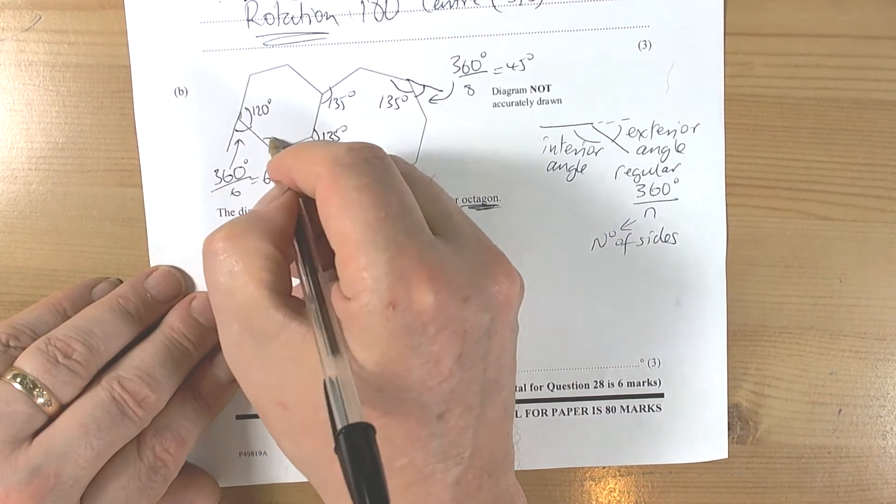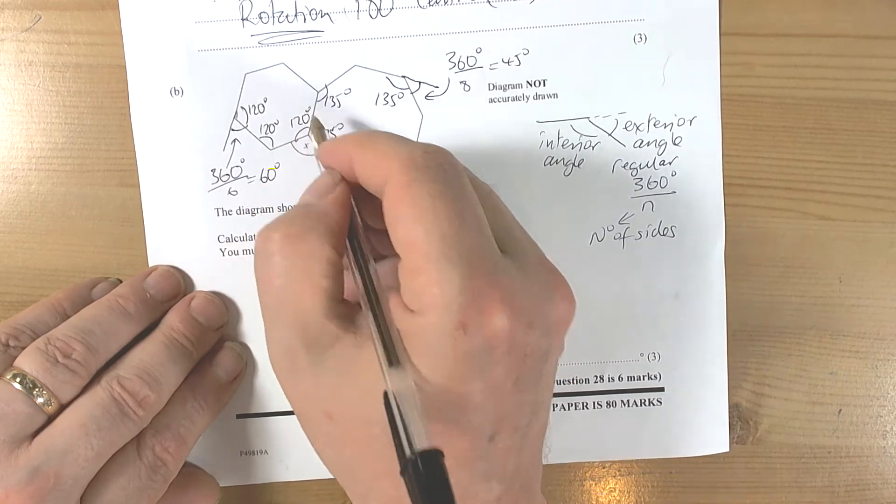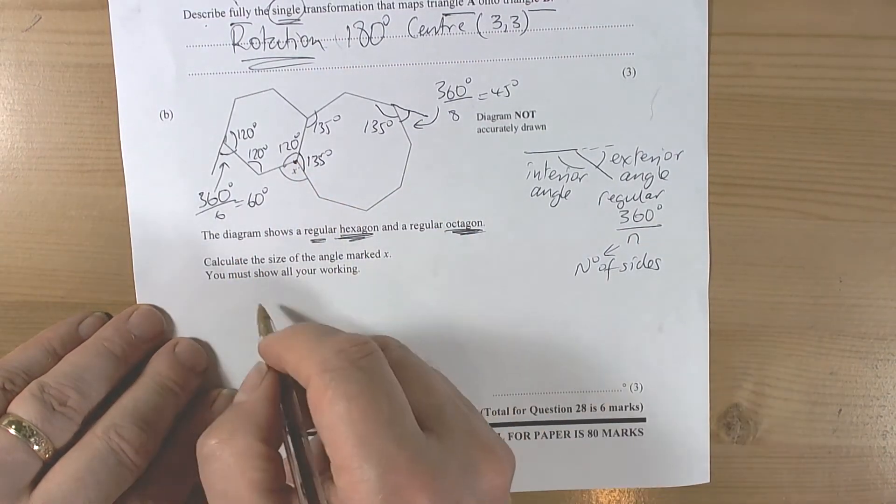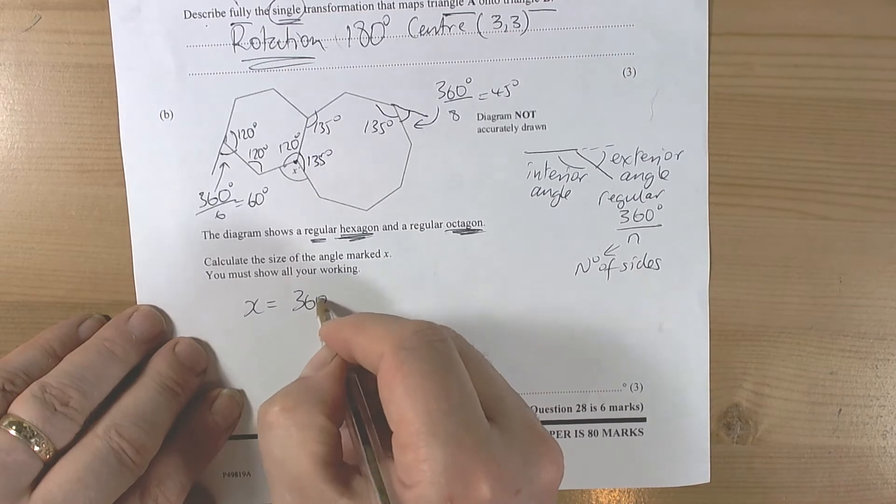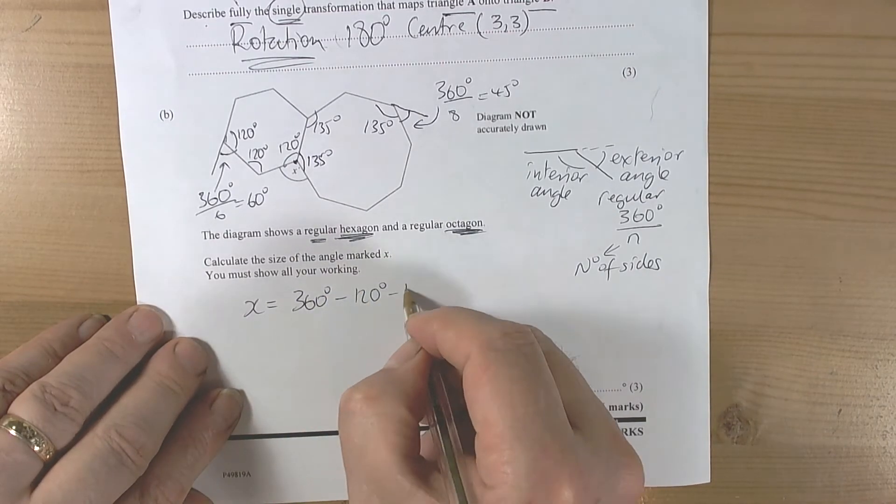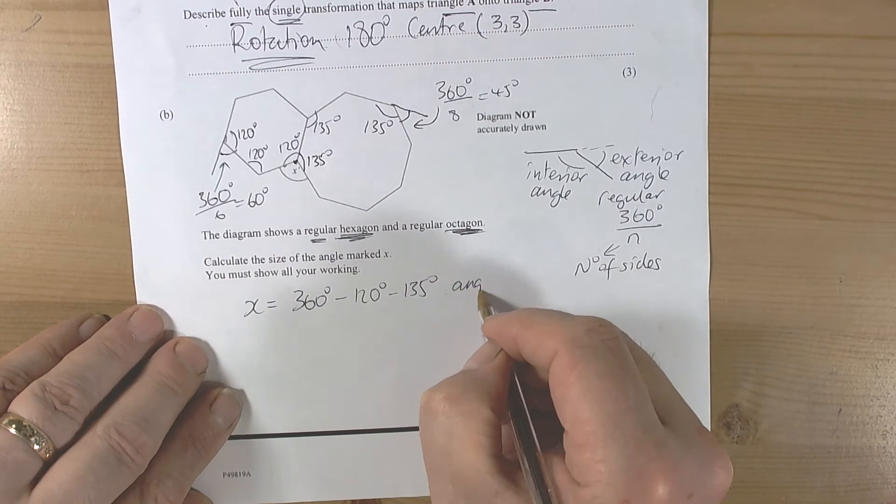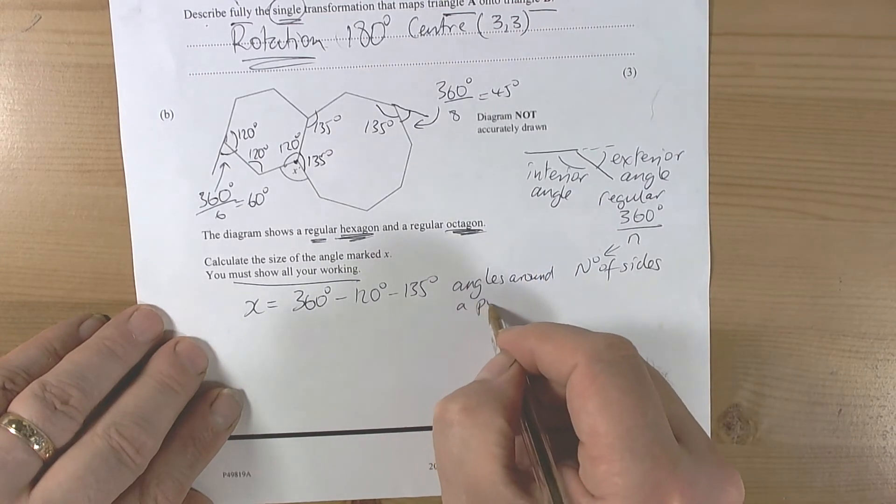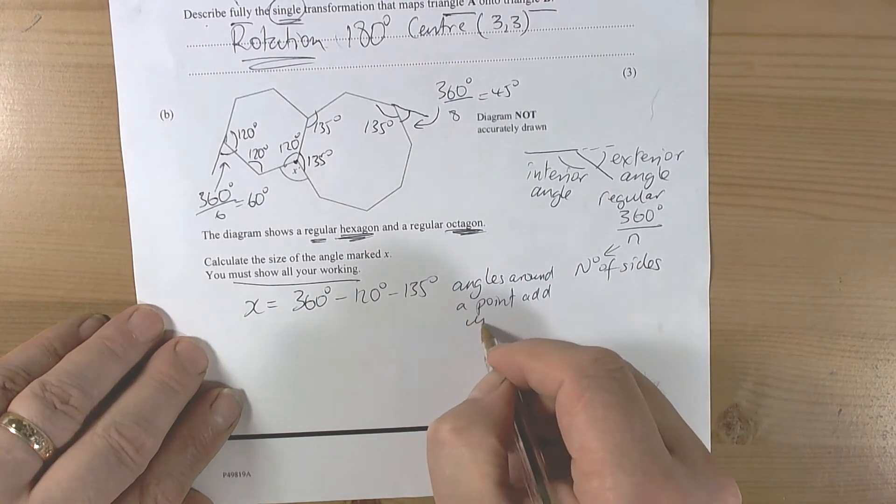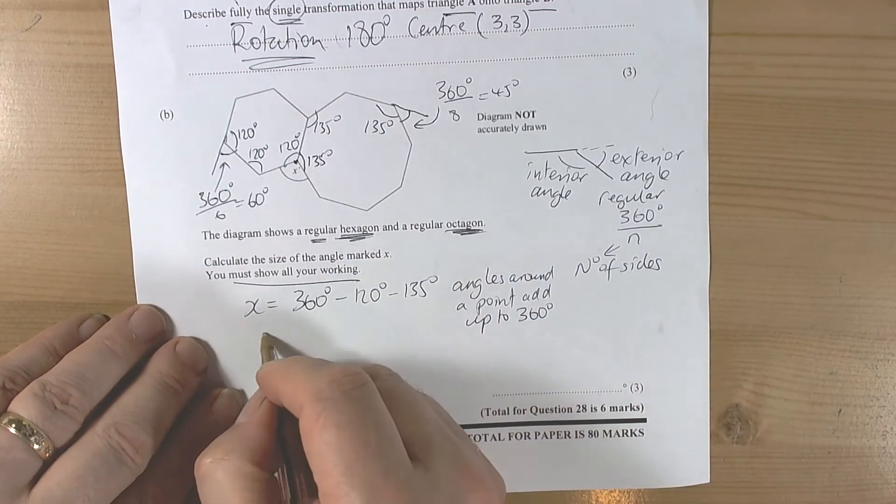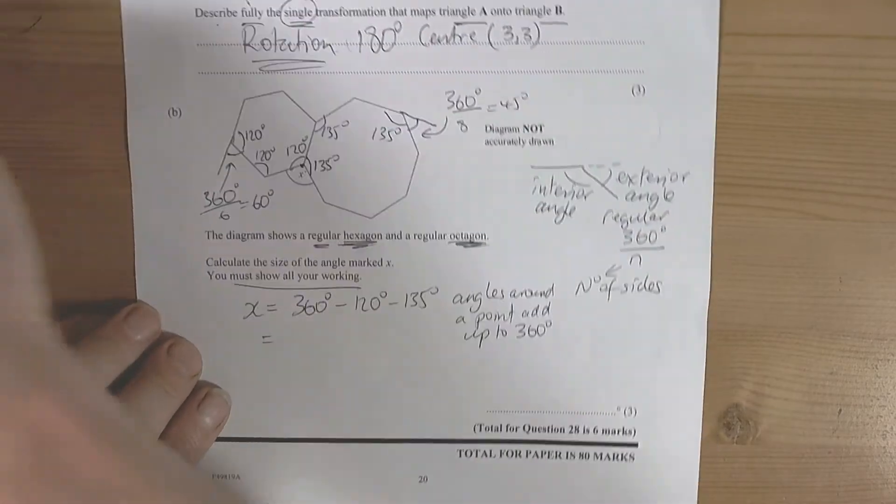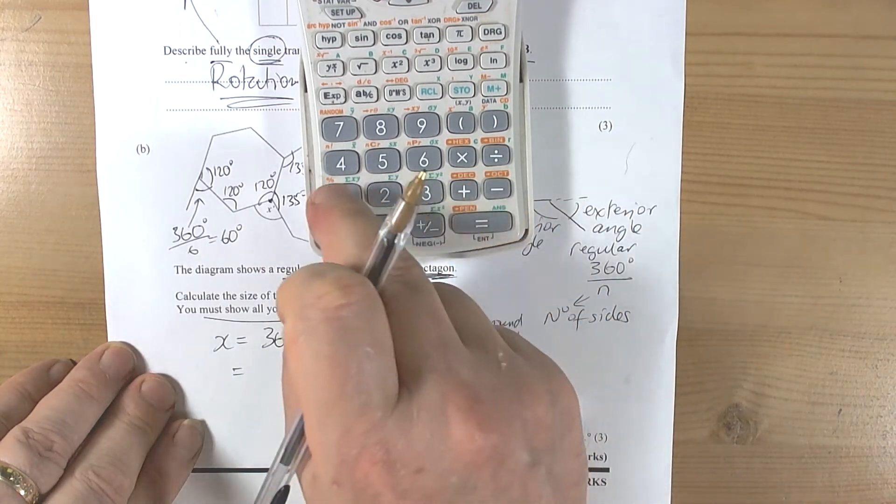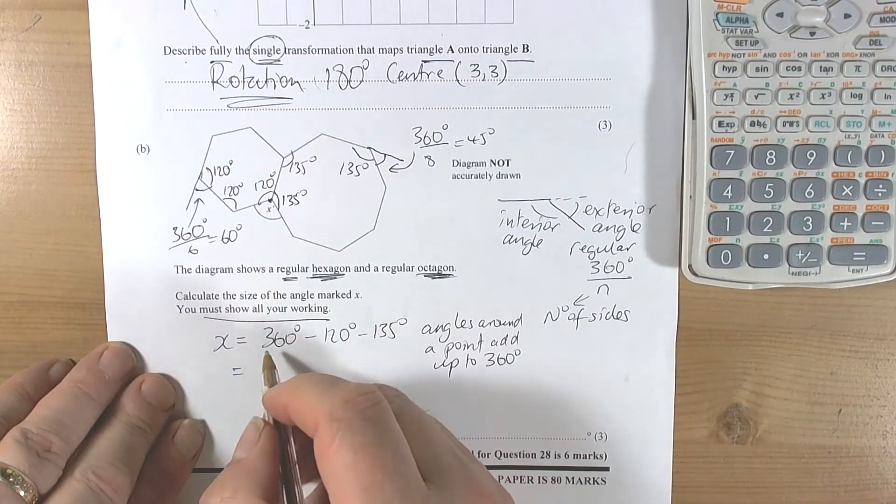Because we know angles around a point add up to 360 degrees, we can work out x. X equals 360 degrees minus 120 degrees minus 135 degrees. The question says show your working, so angles around a point add up to 360 degrees. When we do that on a calculator, 360 minus 120 minus 135 equals 105 degrees.